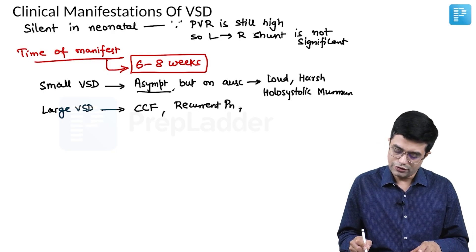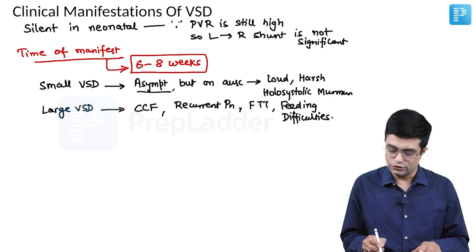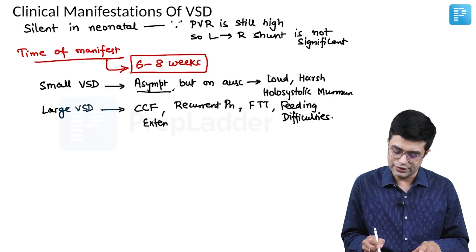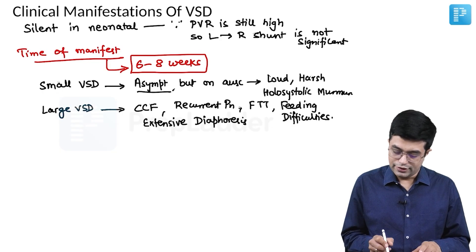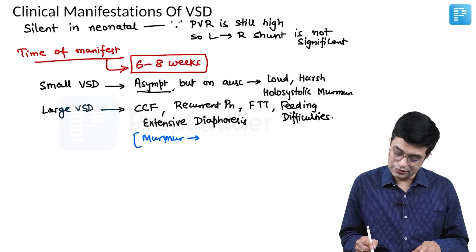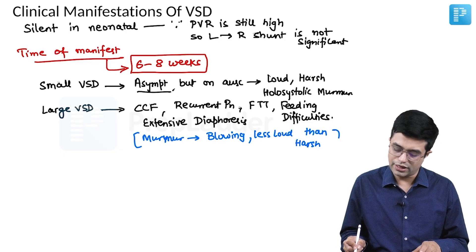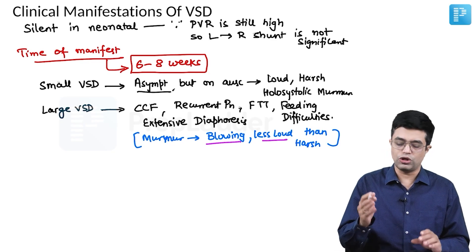Patients will have features of failure to thrive and feeding difficulties. On history, you take note of sweating on the forehead while feeding and the suck-rest-suck cycle. Extensive diaphoresis is also one of the described features of large VSDs. In large VSDs, the murmur instead of being harsh becomes blowing and less loud compared to a small VSD.